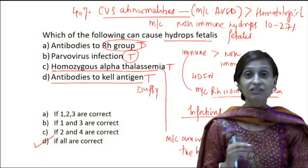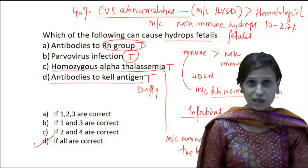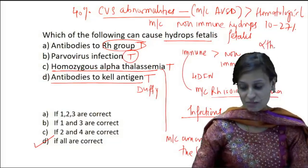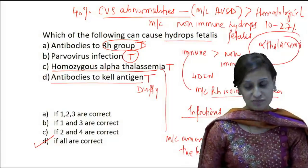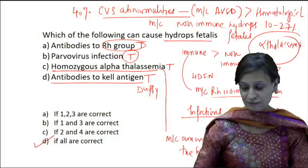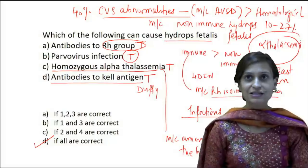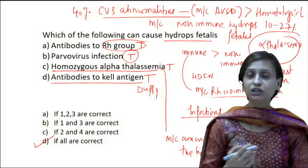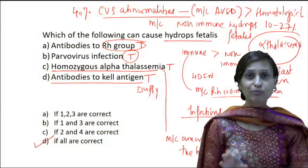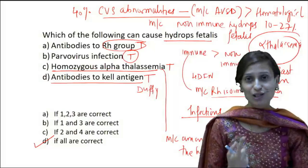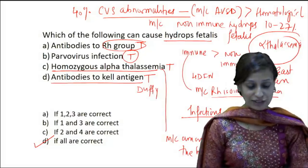However, if we ask specifically about India or Southeast Asia, among Southeast Asians and in India the most common cause of non-immune hydrops fetalis is alpha thalassemia, whereas worldwide it is cardiovascular abnormalities. These are all very important questions asked in various forms, and this one question has many MCQs hidden within it.